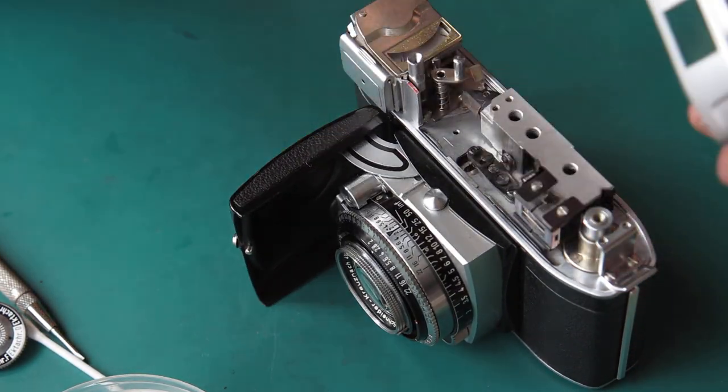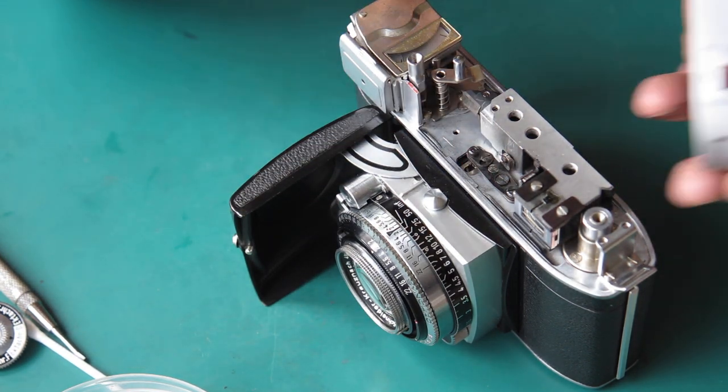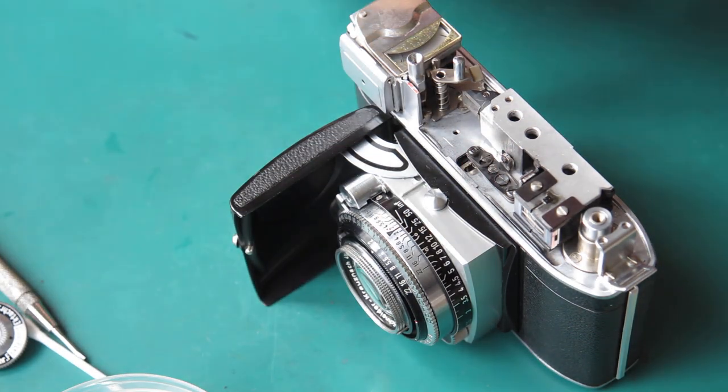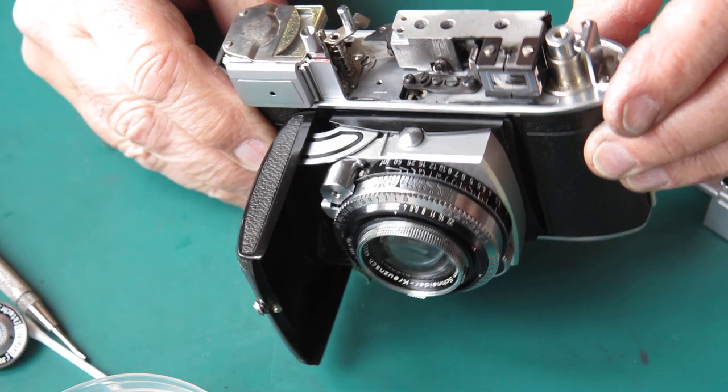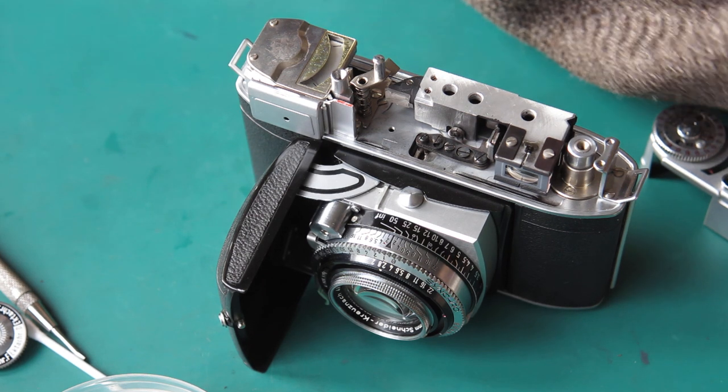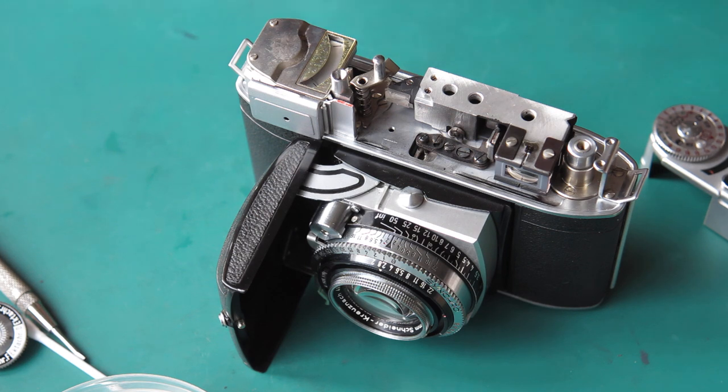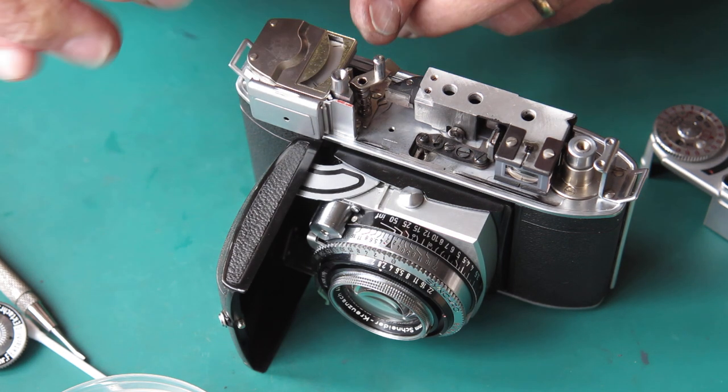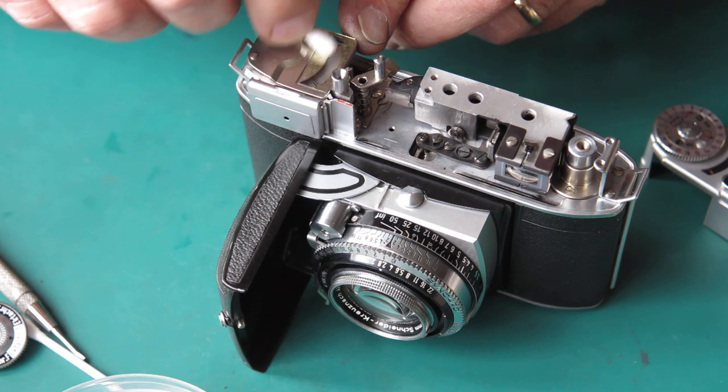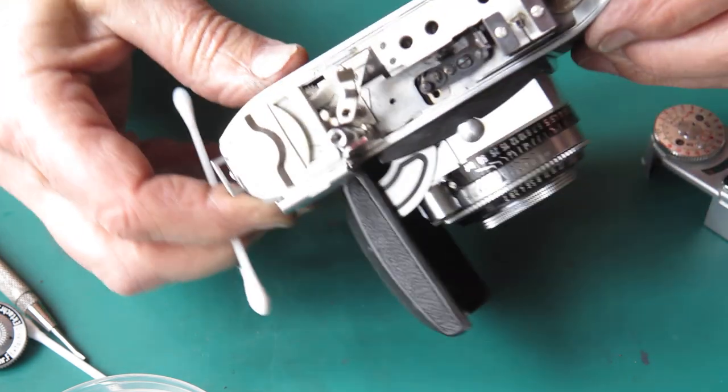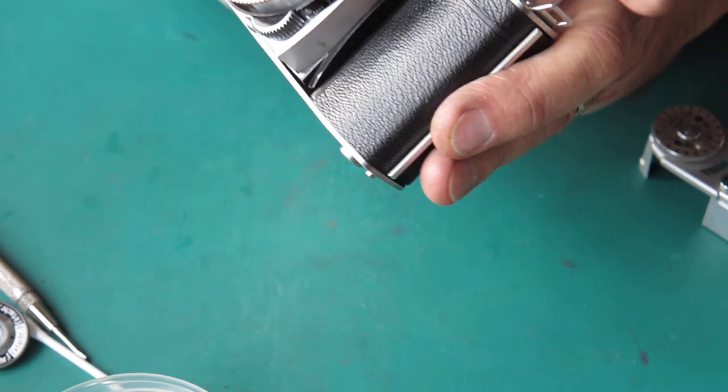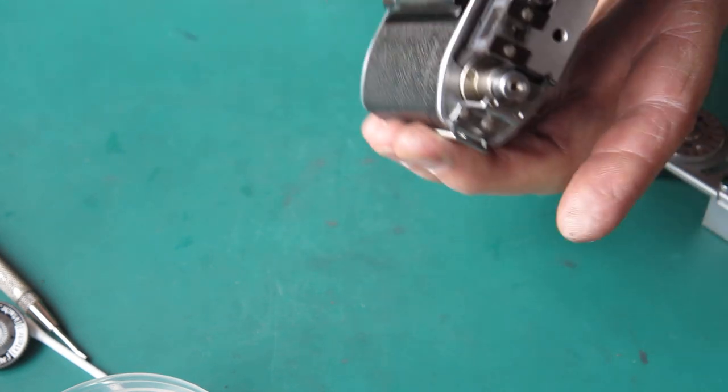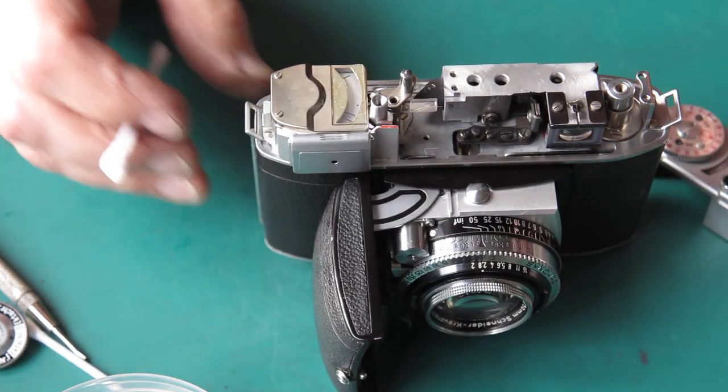I'm going to blow the dust out, any dust that's in here. Check everything, particularly glass surfaces for anything that might have been a fingerprint. And I can see one on top of that meter and clean that glass once more. Check that the rangefinder is all clear, no marks on the prism. That all looks good.